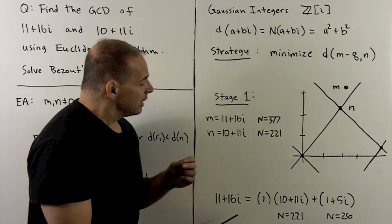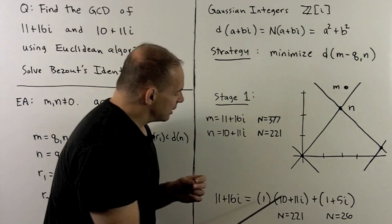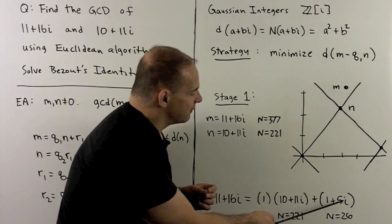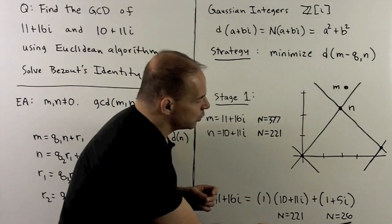11 plus 16i equals 1 times 10 plus 11i plus, and then what's left over, 1 plus 5i. We see here, the N's are 221 and 26.